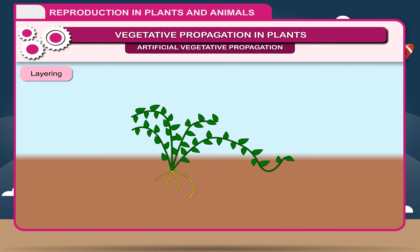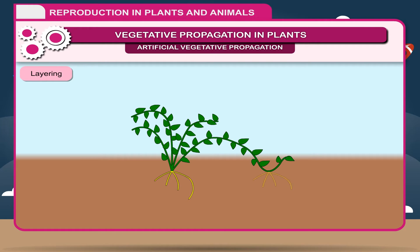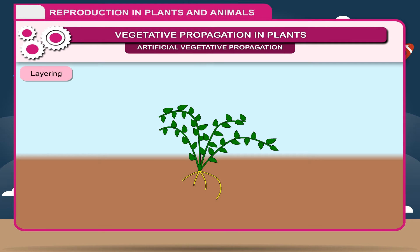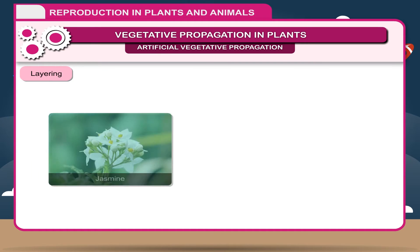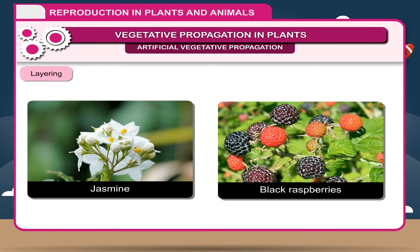Layering. In layering, an intact branch is bent into the soil and covered with moist soil. This is done in such a manner that the growing tip remains above the soil. After a few days, roots arise where the branch is in contact with the soil, and it is then separated from the plant. In this way, a new plant is produced. For example, jasmine, black raspberries, etc.